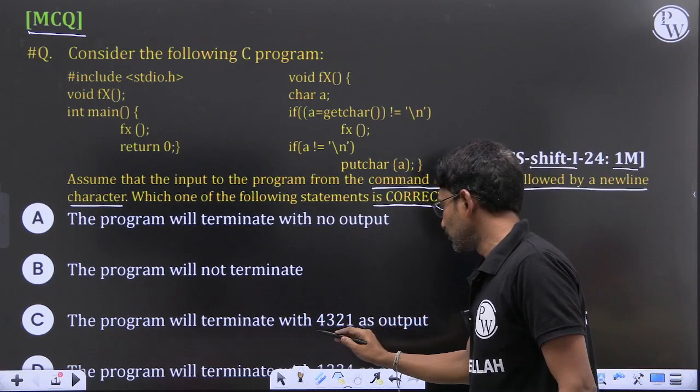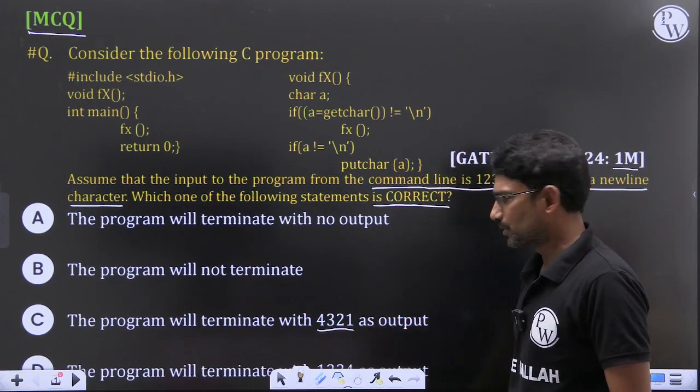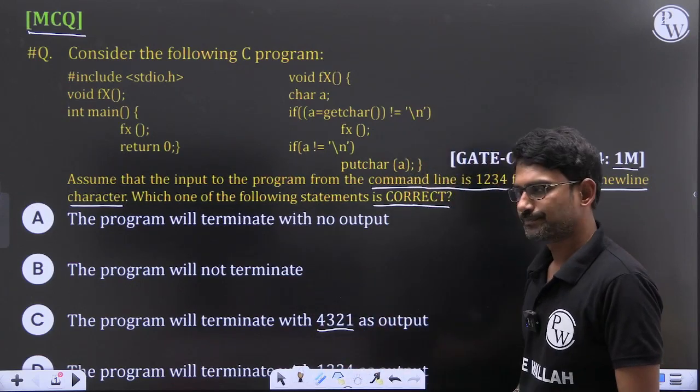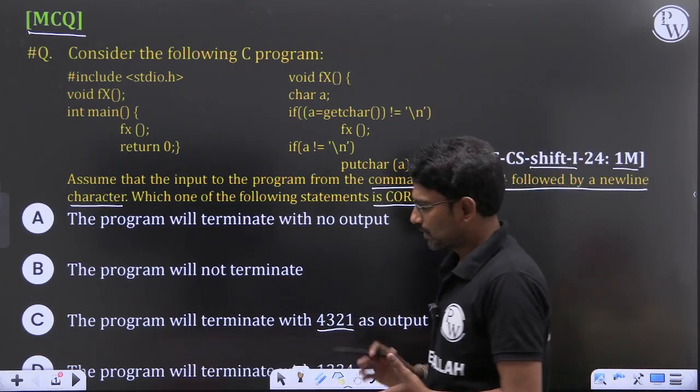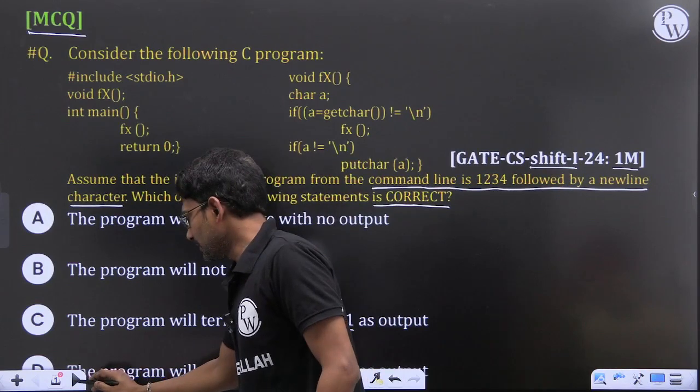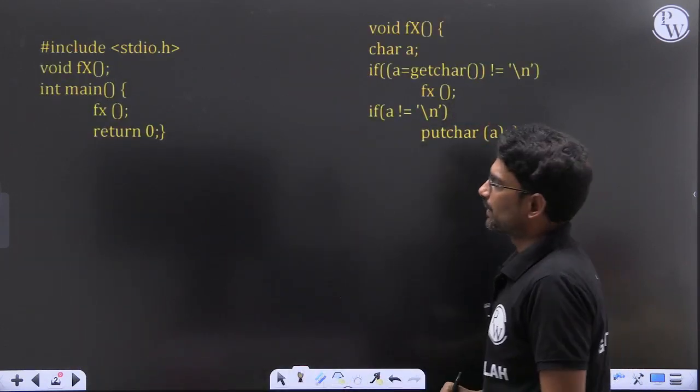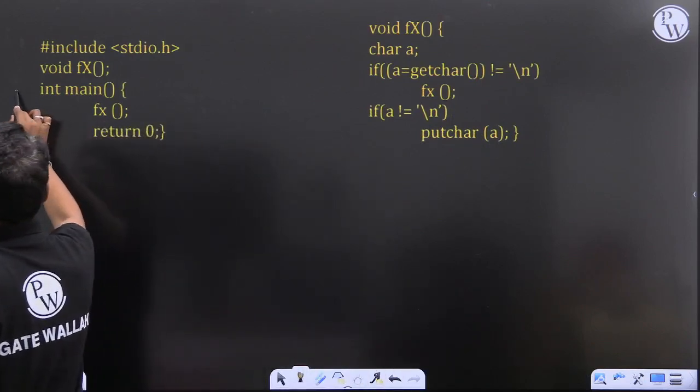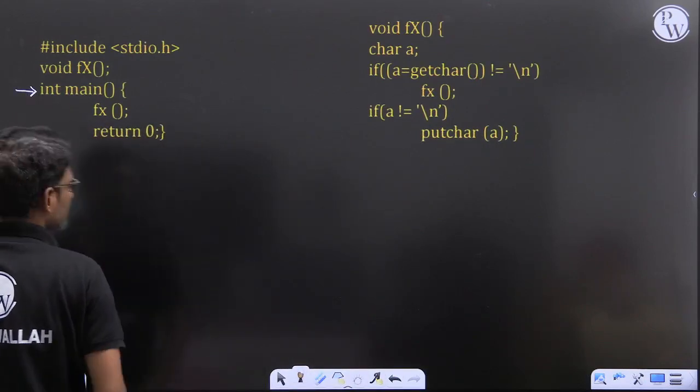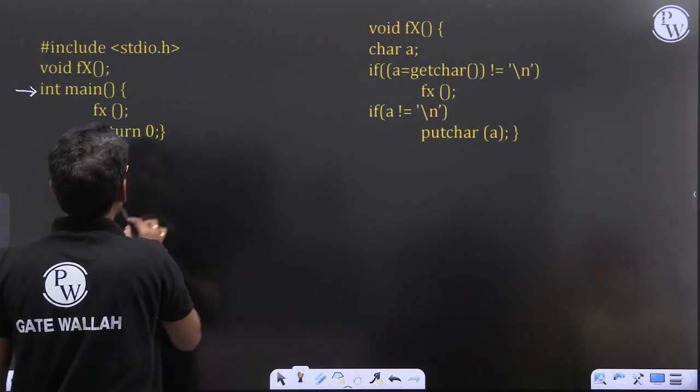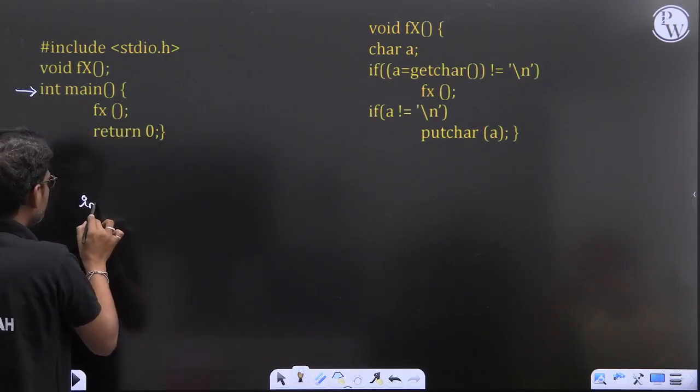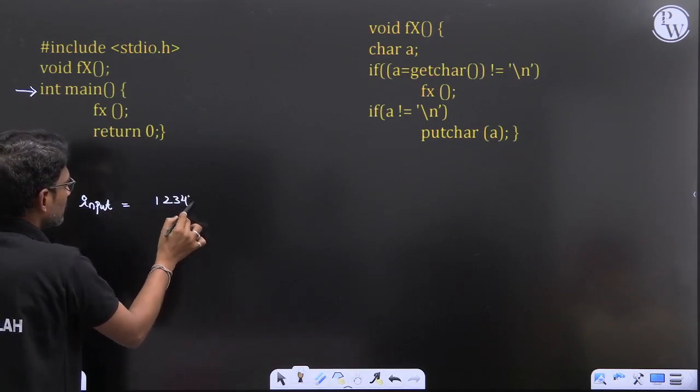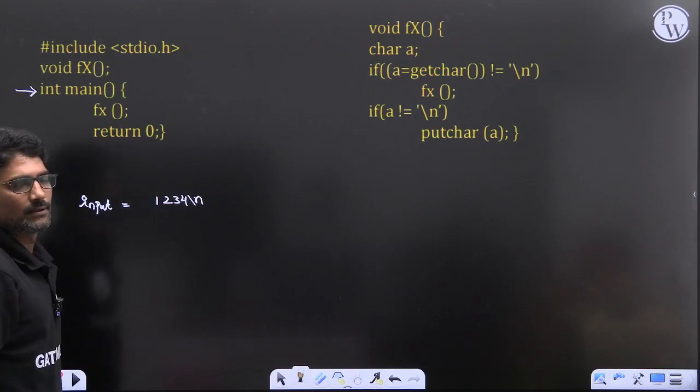The options are: the program will terminate with no output, the program will not terminate, the program will terminate with 4321 as output, and the program will terminate with 1234 as output. So let us solve this. We are given this code. We have to start the execution from main function always.